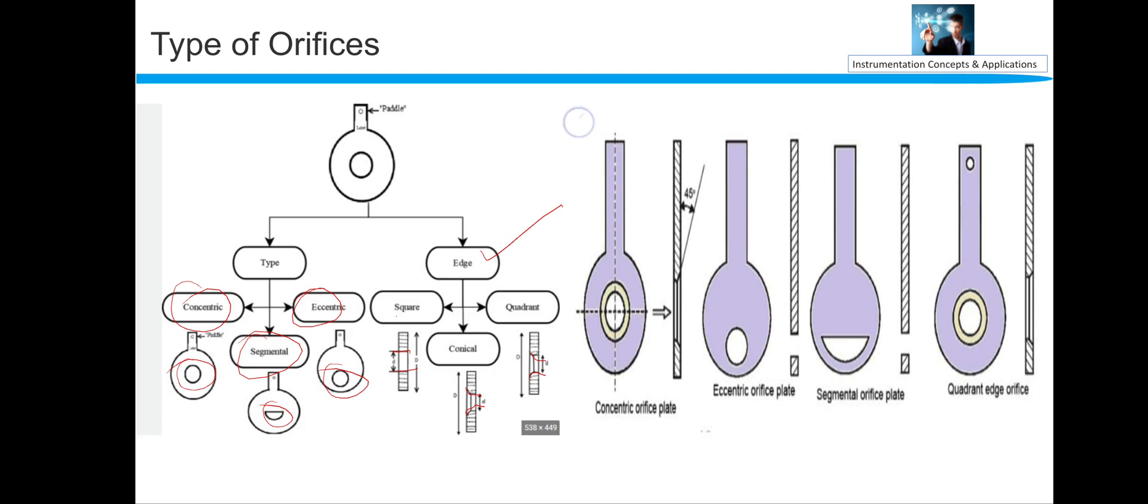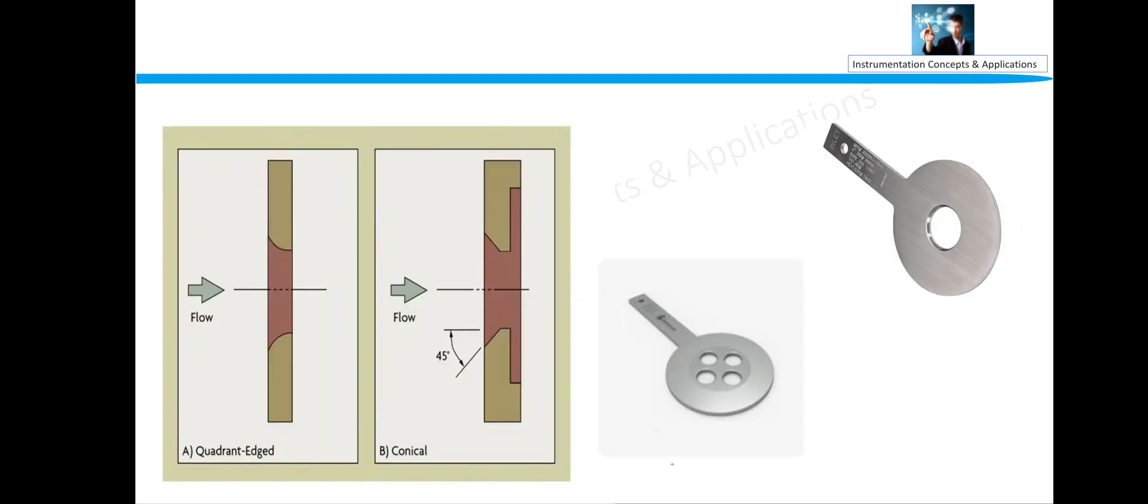You can see that these are some photographs of standard orifice. For more detailed view, this is the quadrant edge, and this is the conical edge. This is the flow inlet, and this is the conical. This angle should be 45 degrees. So you can see this is the square, live photo of a square edge, and this is conical shape of orifice.